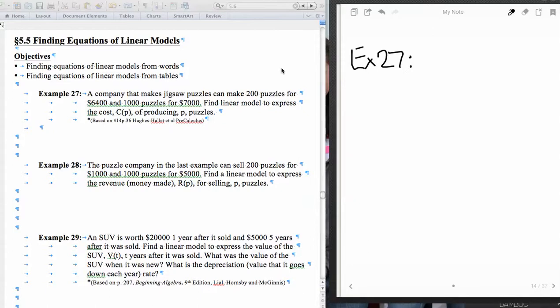This is section 5.5, finding equations for linear models. We are going to find equations of linear models from words and from tables. This is really just a continuation of linear equations and I'm incorporating our function notation into it as well.